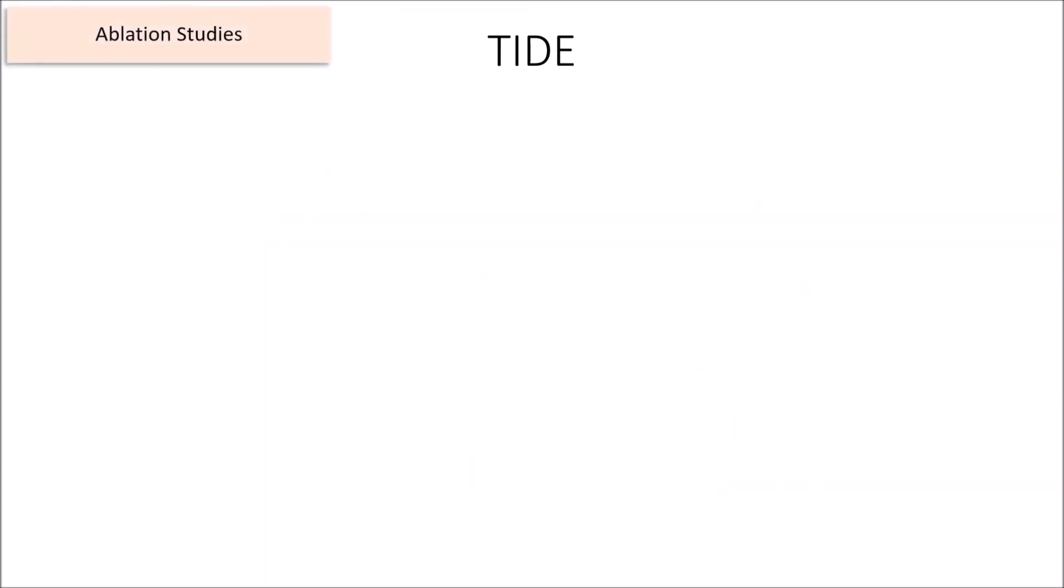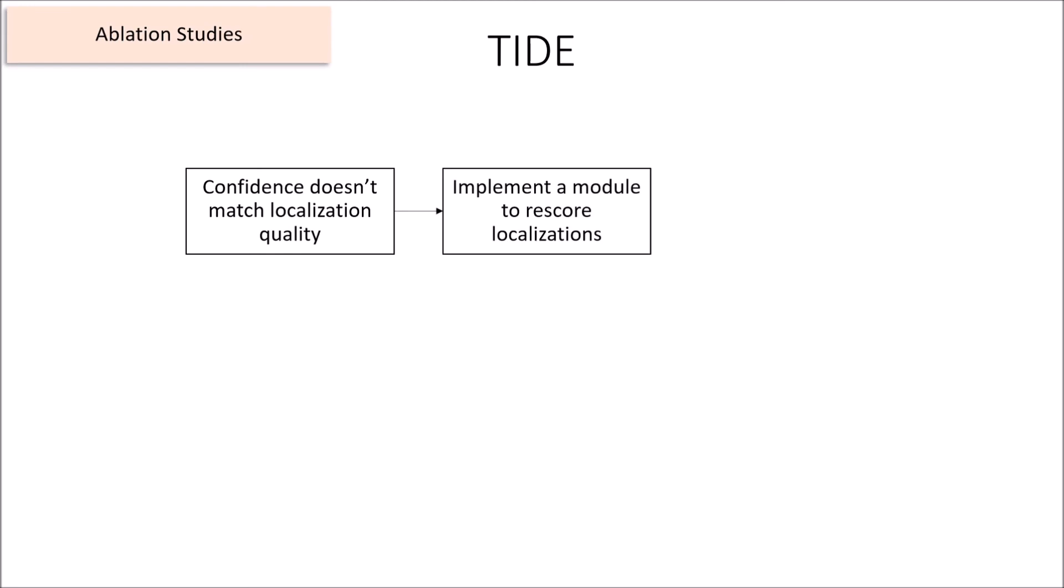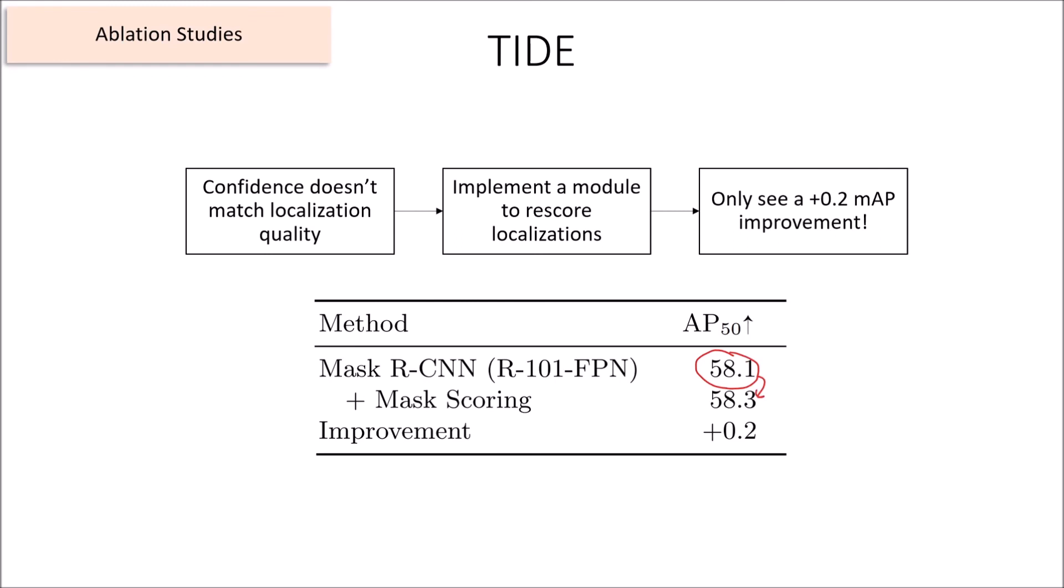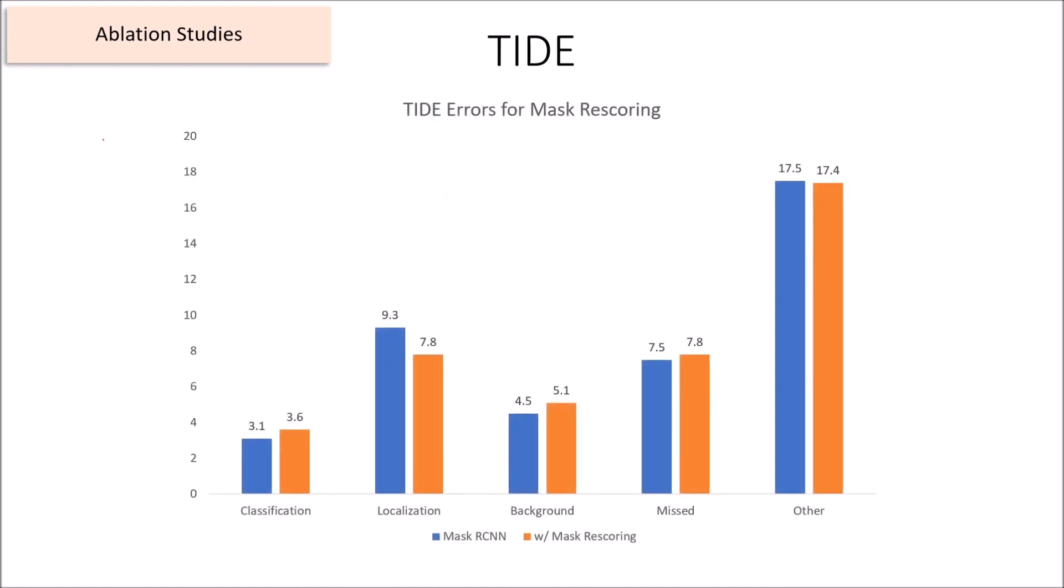Finally, the TIDE metrics can be used to explain MAP changes in ablation studies. Let's say we found that our model's confidence wasn't calibrated well with the quality of its localizations, so we wanted to add a branch that rescores the localizations based on quality. We've implemented the module, but our MAP only increases from 58.1 to 58.3. Did our module do anything significant? If we take a look at the TIDE error distribution before and after the model, instead of just MAP, we can see that the localization error went down significantly as we had hoped. But all these other error types went up, which balanced out the MAP in the end. Without this extra justification from TIDE, we wouldn't have known that our method actually worked, and since TIDE can be compactly represented as just a bunch of numbers, this kind of analysis fits neatly into ablation tables.